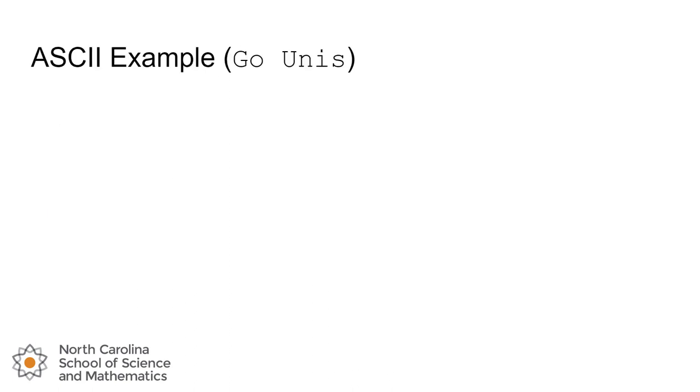Here's an example. Let's say we wanted to take the message Go Unis with the space between them. We can convert that to binary one character at a time. We can use the table to convert each one of those characters. I've used SP here for the space. And you just concatenate them one after the other, left to right, just like you would write it out on paper.